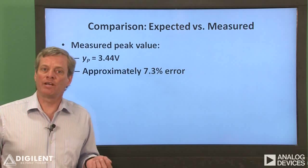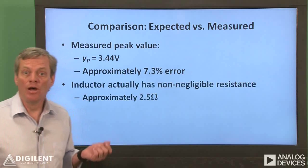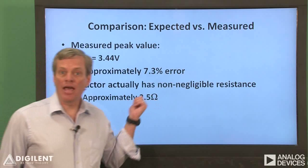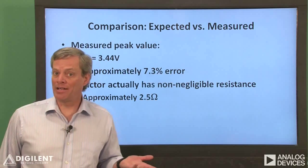Now there are a couple of effects that we can include which could improve our predictions. For example, our inductor may have a non-negligible resistance, which we should include in our analysis.